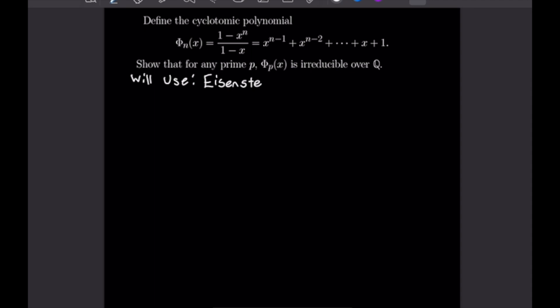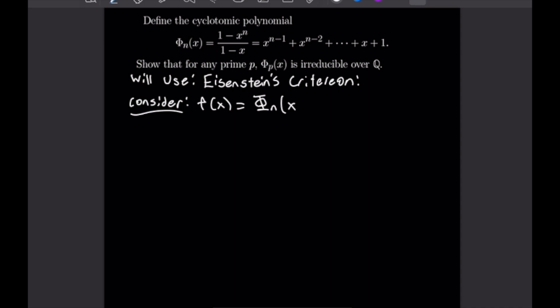For this example, we define the cyclotomic polynomial as (1 − x^n)/(1 − x), which equals x^(n−1) + x^(n−2) + … + x + 1. We want to show that for any prime p, a cyclotomic polynomial is irreducible over Q, the rationals. To do this, we are going to use Eisenstein's criterion. We consider f(x) equal to our polynomial evaluated at x + 1.